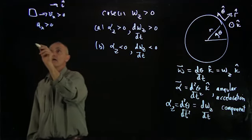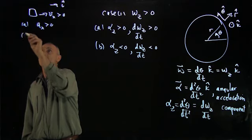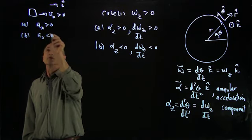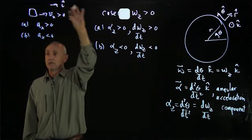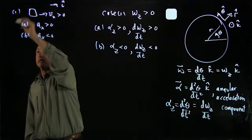So in our linear case, if we had a_x less than 0, this is the classic example of braking. The object is moving in the x direction and slowing down.